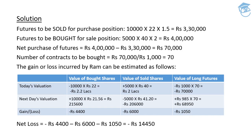On the very same lines, he has also sold A Limited shares for ₹2,00,000. It has been told that the beta for A Limited is 2, so he needs to protect and hedge his position by multiplying ₹2,00,000 with 2, which is the beta of A Limited. This gives a figure of ₹4,00,000. Futures need to be bought for the sale position. So what is your net purchase of futures? You bought ₹4,00,000 worth of futures and at the same time sold ₹3,30,000 worth of futures. So your net purchase of futures is ₹70,000.